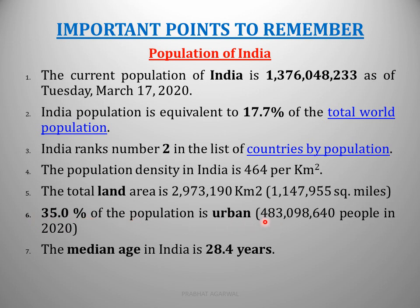That means 48,30,098,640 people as per 2020 are living in urban areas. Population can be divided into urban area (शहर) and rural area (गाँव-देहात). Approximately 35% of the population is living in urban areas in 2020.